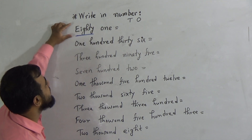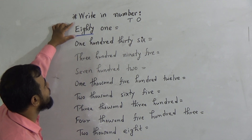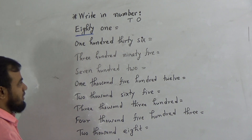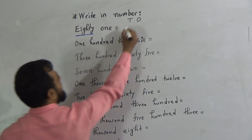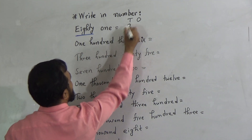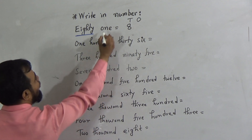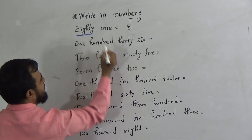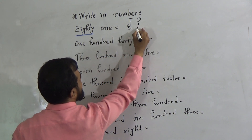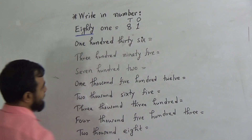It is 81. To write down 80, we should write down 8 in the 10s place. In the 10s place, we should write down 8. And to write down 1, we must write down 1 in the 1s place. This gives us 81.